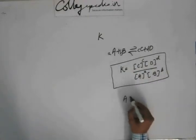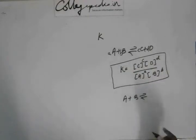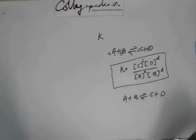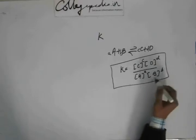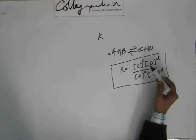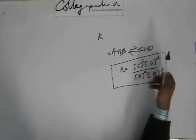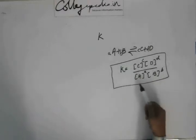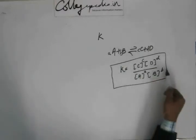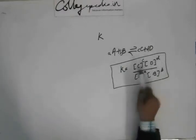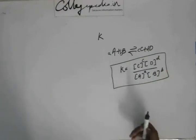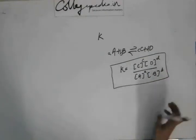Initially there was only A and B. When they started reacting, they began to form C and D. That's why we have defined K like this — so that when C and D are large, it means C and D have formed more and A and B are left in lesser amounts. A and B are less, so this fraction is large. And that's why if K is large, we say the reaction has more tendency to go in the forward direction.